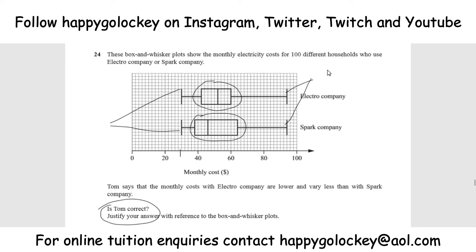So first of all, let's discuss whether Tom's correct. Tom says the monthly costs with Electro are lower — is there anything here we can use to prove that Electro's costs are lower? Looking directly at the median, that's the middle line, the median bill for Spark is actually lower. So the first two marks would come from saying Tom is wrong. When we compare the median — this is going up in twos by the look of it — the median for Spark is 46, whereas the median for Electro is 52. So for the first two marks, Tom is not correct because the median for Spark is lower: 46 versus 52.